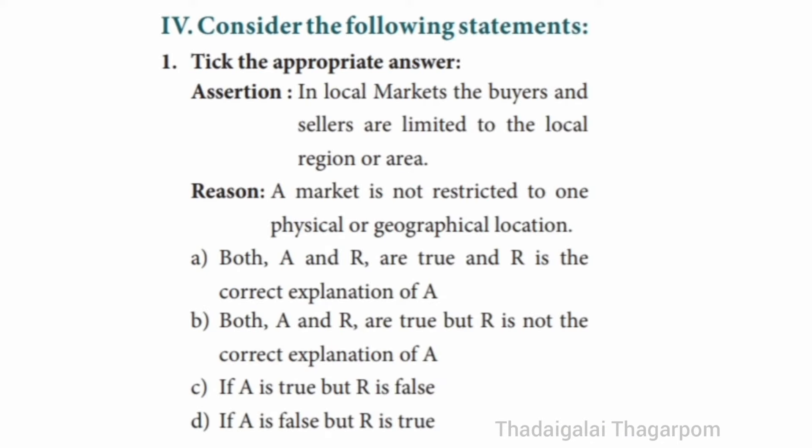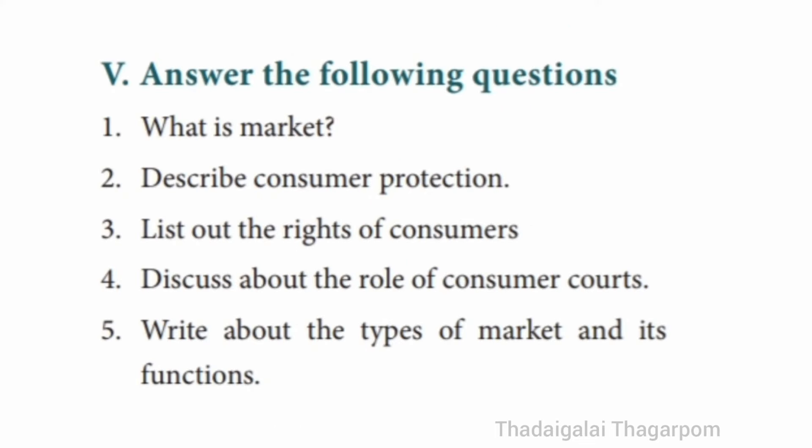Roman numeral 4 — Consider the following statements and tick the appropriate answer. Assertion: In local markets, the buyers and sellers are limited to the local region or area. Reason: A market is not restricted to one physical or geographical location. The answer is B — Both A and R are true, but R is not the correct explanation of A.